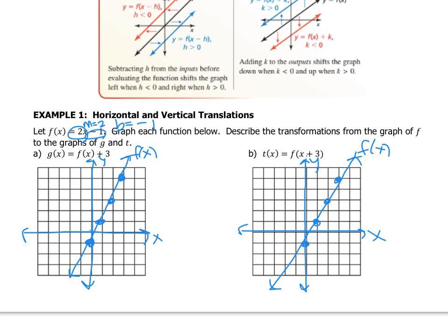Now we're going to take our output — remember f of x is another way of saying y — and add 3 to the y values, so the output increases by 3. Each point shifts up 3 on the grid to a new position. Mathematically, even though the graph might look like it shifted left a little, what happened is it shifted up 3 units.